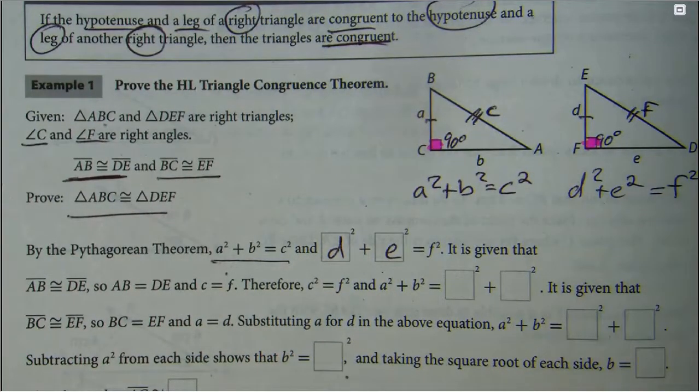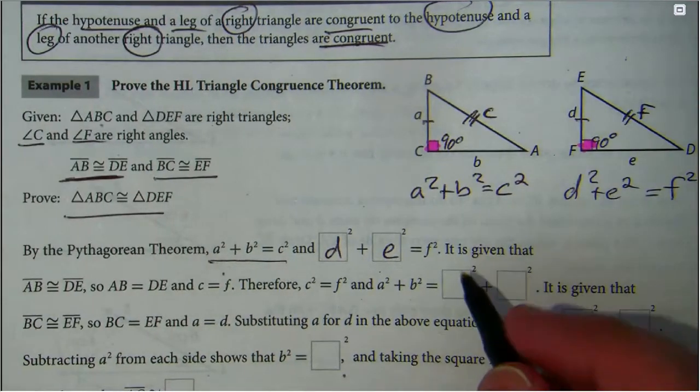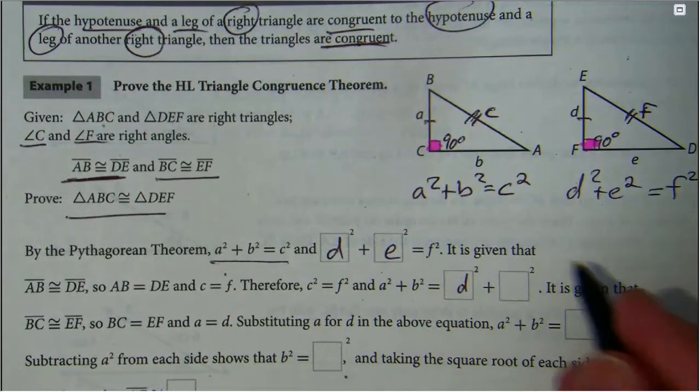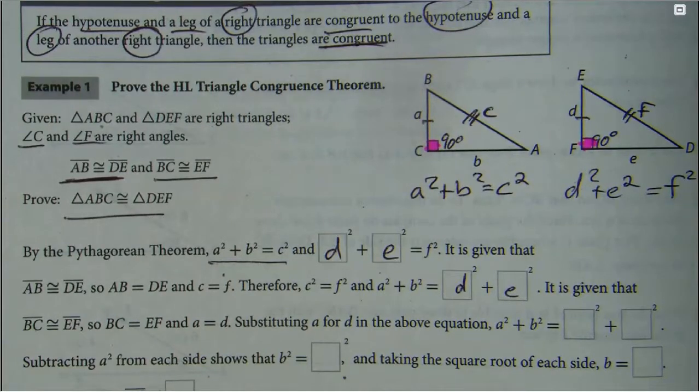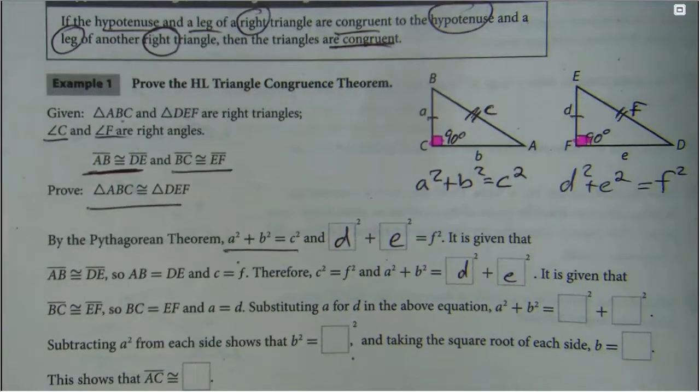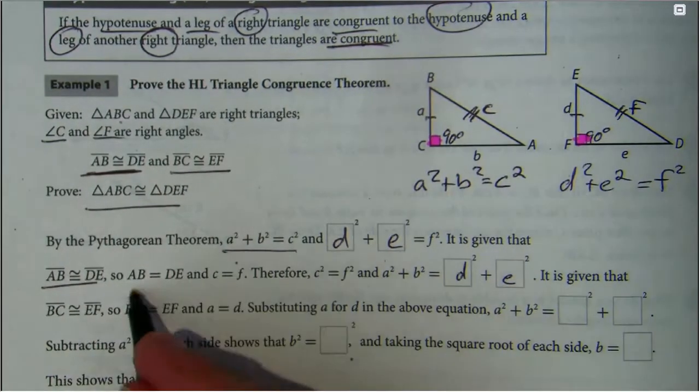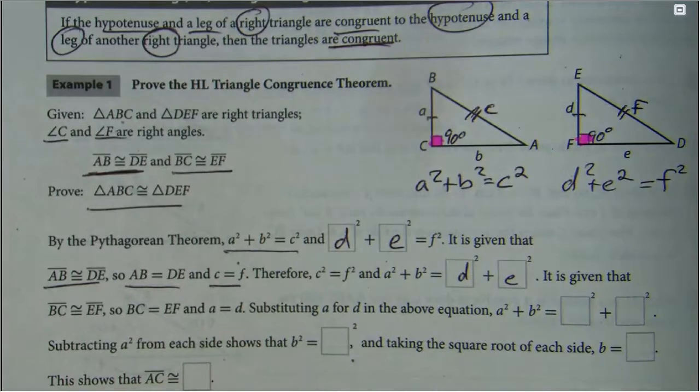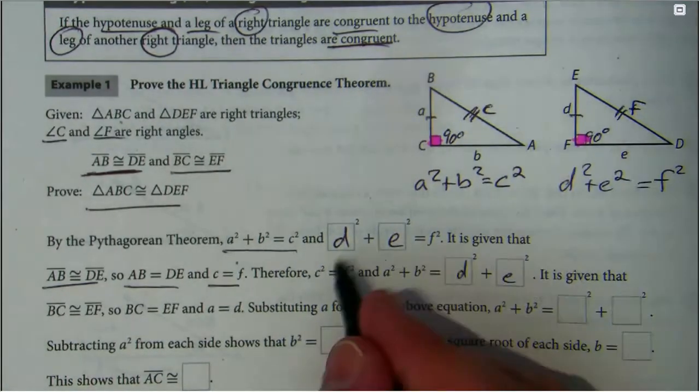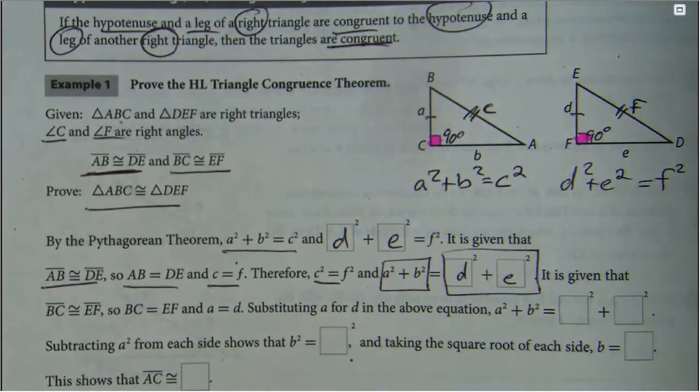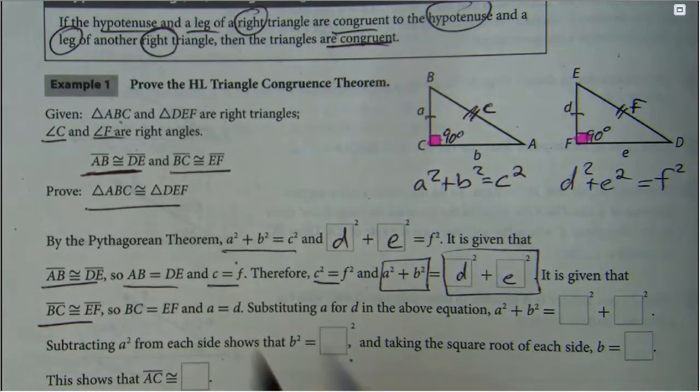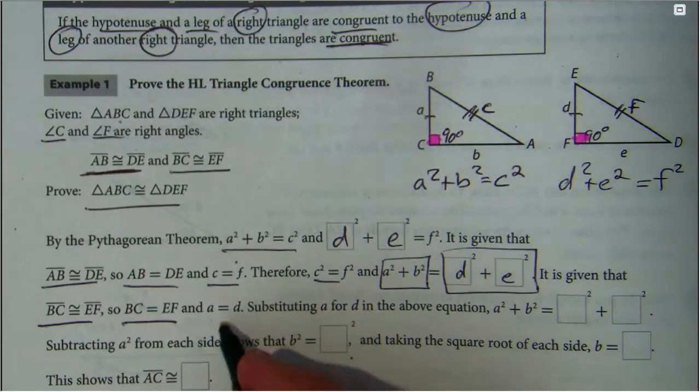Because c squared should be the same as f squared, we're going to do some basic substitution. A squared plus b squared should equal d squared plus e squared. They should be the same, especially if those two line segments were given to be congruent. Since these guys are congruent, their measurements should be the same, so c should equal f.